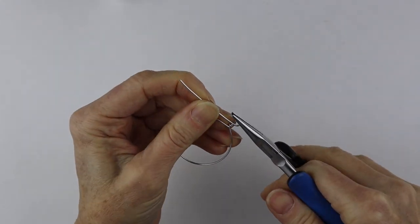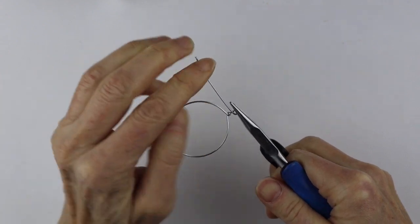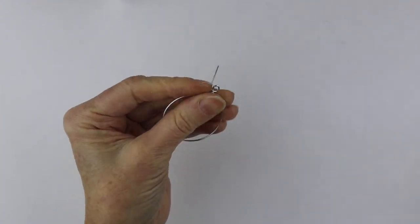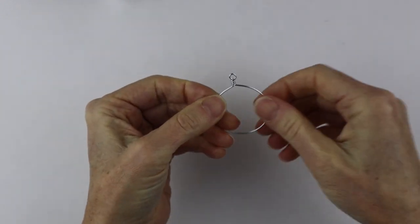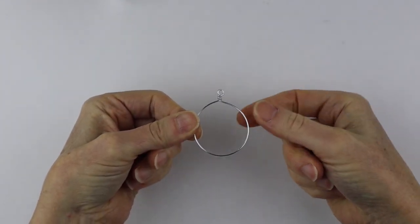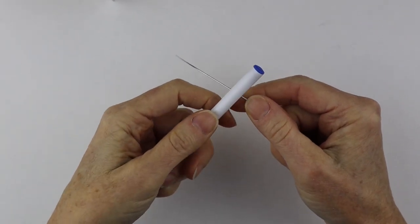Hold this with your flat pliers and just bend it around a couple of times like that, and there you have your frame for any pendant.